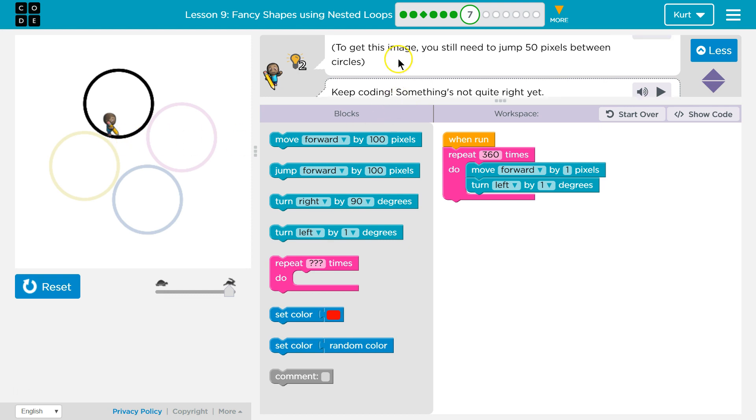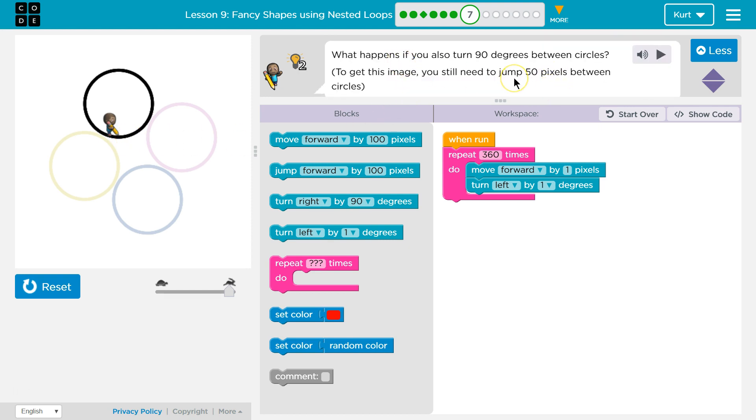But that's only one circle. So now it's saying something about, we need to jump 50. We're going to turn 90 degrees. Let's try turning right, I guess. And then we'll do the jump, and it says 50, so I'm going to change this to 50. And let's see what this does.